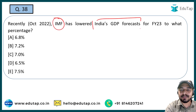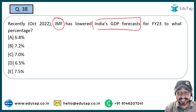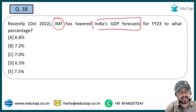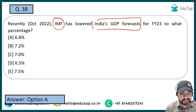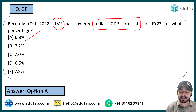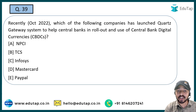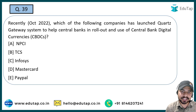The next question: IMF has lowered India's GDP forecast. What is the new percentage? This is a very direct answer with no need for explanation. The right answer is 6.8%.